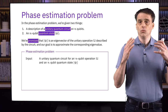We can identify additional eigenvectors using exactly the same reasoning. In fact, if we simply replace ω_r with ω_r^j for each j between 0 and r-1, we get a whole family of eigenvectors of M_a. This gives us the connection we need to apply phase estimation to the order-finding problem.